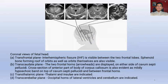In the coronal view, there are four planes used to assess the fetal head: the transfrontal plane, the transcaudate, the thalamic, and the transcerebellar plane. In the transfrontal plane, the interhemispheric fissure is visible between the two frontal lobes, and the sphenoid bone forming the roots of the orbits as well as the orbits themselves are also visible. In the transcaudate plane, the two frontal lobes are displayed on either side of the cavum septum pellucidum. The cross-section of the anterior part of the body of the corpus callosum is also evident as a mildly hypoechoic band on top of the CSP and between the frontal lobes. In the thalamic plane, the thalami and insulae are indicated.